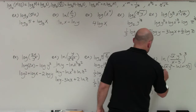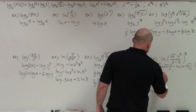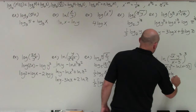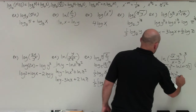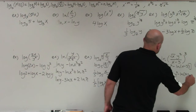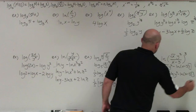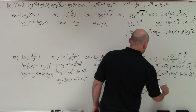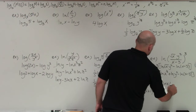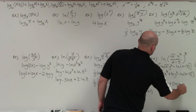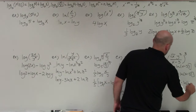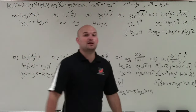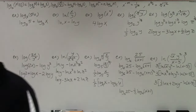Now I can apply the power rule. That gives ln of x to the 1/2 plus ln of y squared minus ln of (x minus 3). Now I bring my powers in front. And I am now finished expanding my logarithmic expressions. Thanks.